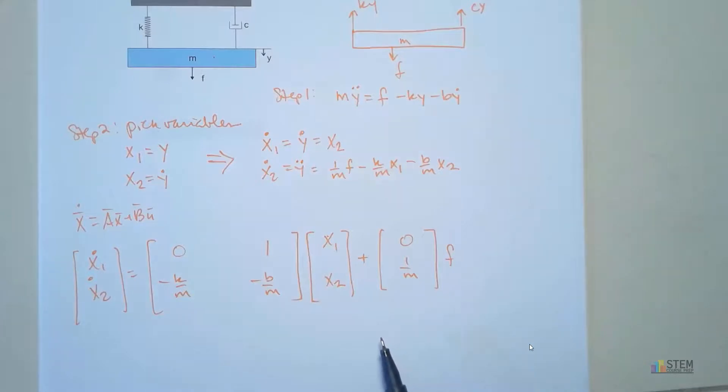So there we have it. It's always a good idea to go back through and make sure you did everything right, got your signs right. We have zero times x1 plus one times x2 - that gives me x2, which is what we have here because that's zero. And then down here, we've got negative k over m times x1 minus b over m x2. That's what we have here. And then plus one over m times f. So those are correct.